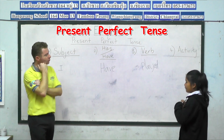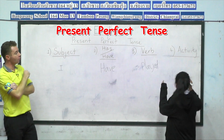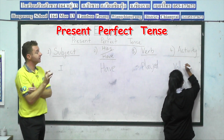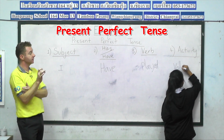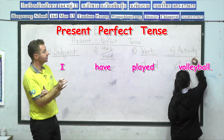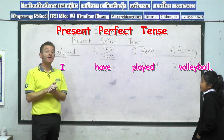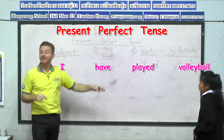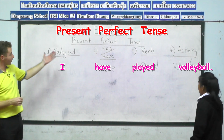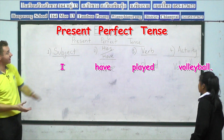But now we need our activity. What have you played, Lackau? Volleyball. Okay, so volleyball: V-O-L-L-E-Y-B-A-L-L. And then how do we finish our sentences guys? Full stop. Full stop — not a question mark, that's for questions. So you can see Lackau has correctly constructed an affirmative sentence in the present perfect tense.